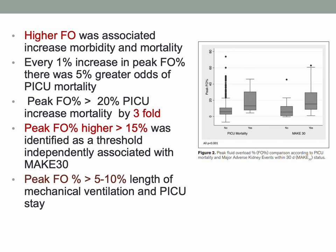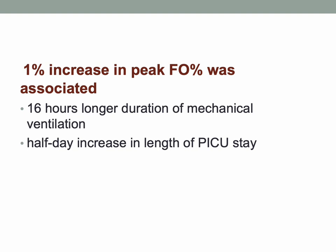Higher fluid overload was associated with increased morbidity and mortality, and for every 1% increase in peak fluid overload, there was a 5% greater odds of PICU mortality. A peak fluid overload of more than 15% was identified as a threshold independently associated with major acute kidney events, while 5–10% fluid overload was associated with length of mechanical ventilation and PICU stay. A 1% increase in peak fluid overload was associated with 16 hours longer duration of mechanical ventilation and half a day increase in PICU length of stay.